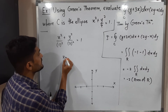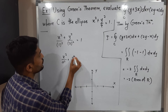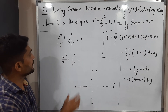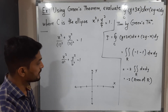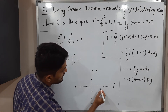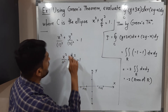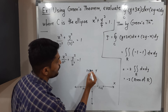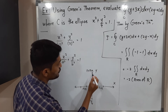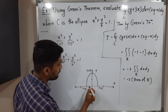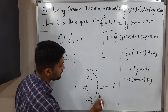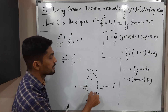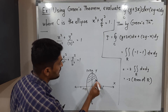The standard form of an ellipse is x²/a² + y²/b² = 1, where a is the x-intercept and b is the y-intercept. Comparing, we get a = 1 and b = 2. So the ellipse cuts the x-axis at (1, 0) and (−1, 0), and the y-axis at (0, 2) and (0, −2). The region R is the interior of this ellipse.